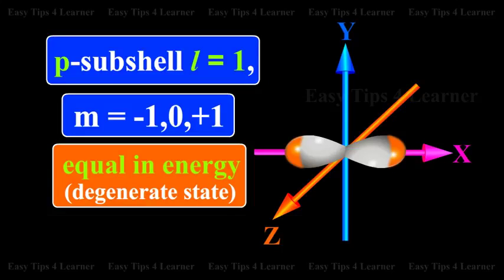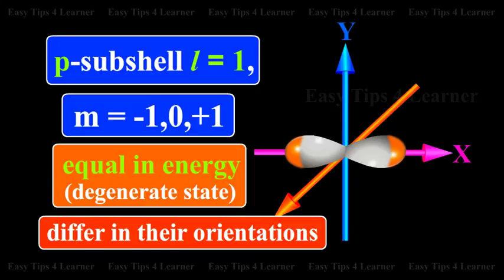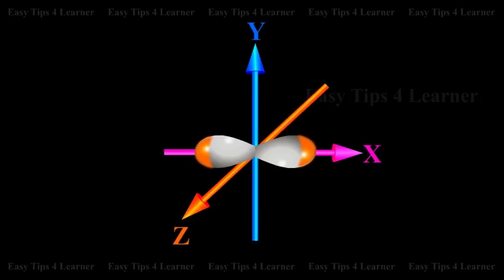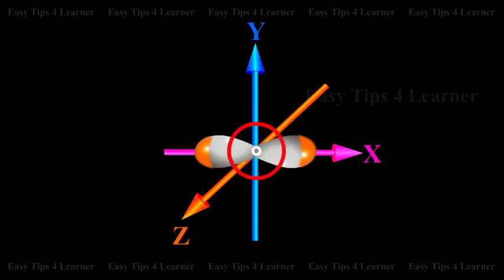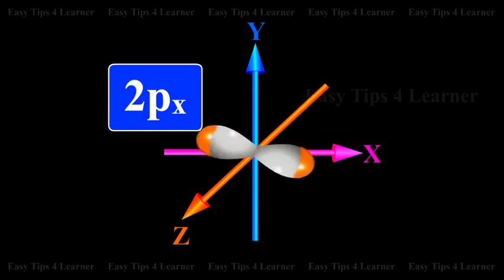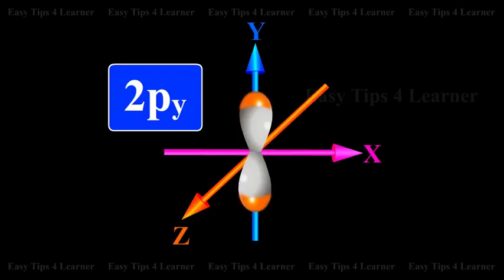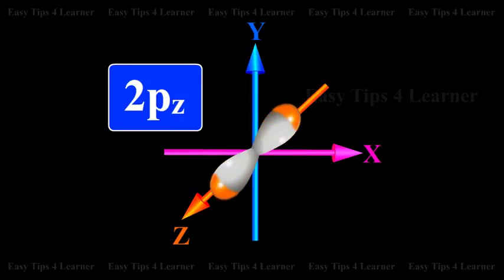This means that P orbitals can have three possible orientations. These three P orbitals are equal in energy — that is, they are in a degenerate state.